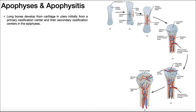In this video, we're going to talk about a bony feature on some long bones called an apophysis, or plural apophyses, and then we'll look at a couple of conditions that result from overuse and pulling on those apophyses — each called an apophysitis.